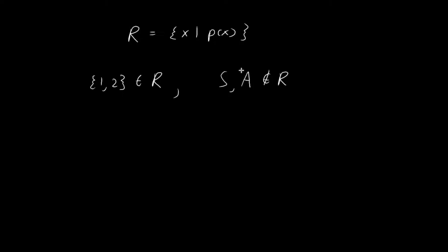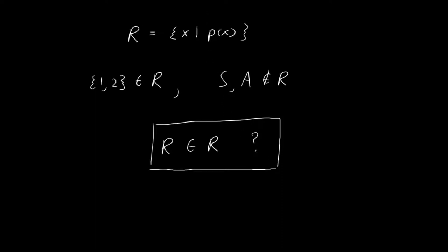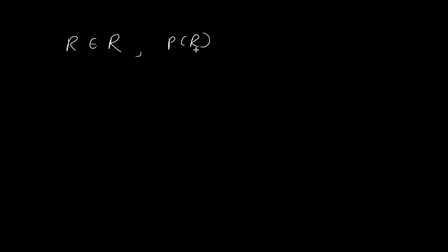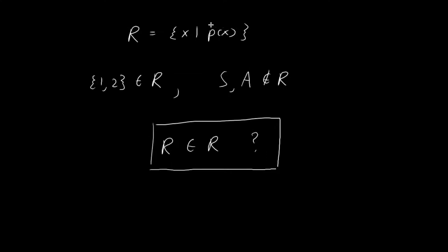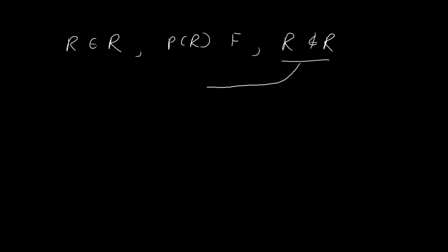And so now our problem arises. We want to determine whether R is an element of R or not. First, suppose R is indeed a member of R. If that's the case, then p of R, by definition, is going to be false. And if p of R is false, then it must be the case that R is not a member of R, because R must not be inside this set R. This conclusion contradicts our initial assumption — it's the exact reverse. And so because of this logical contradiction, it must be the case that R is not a member of R.